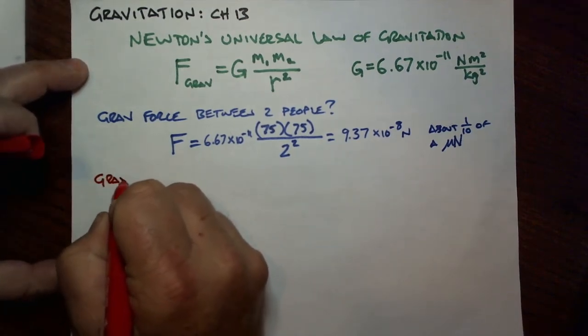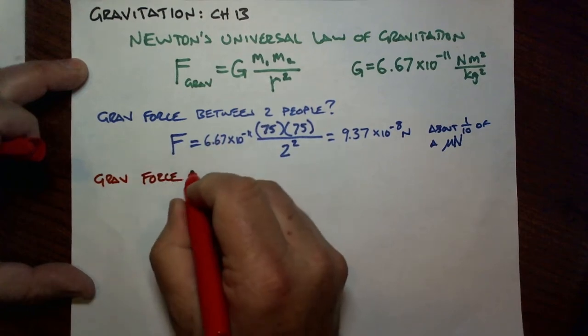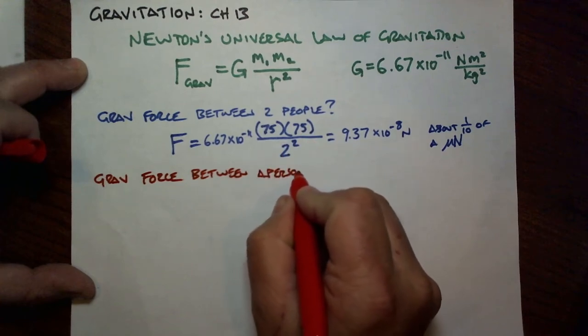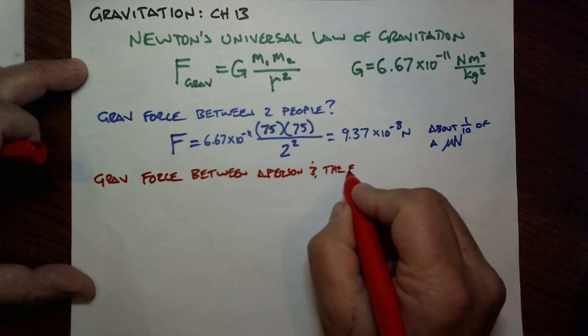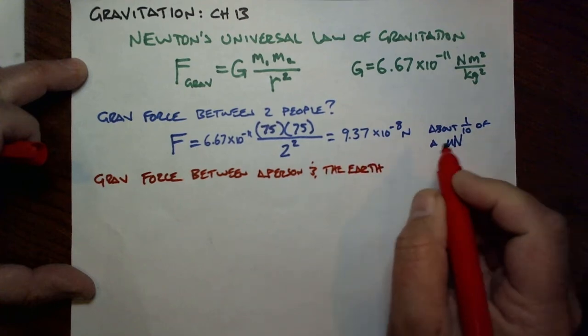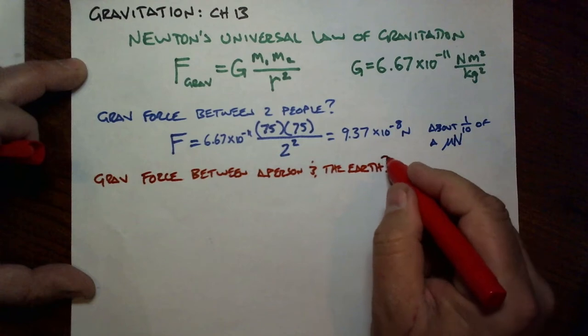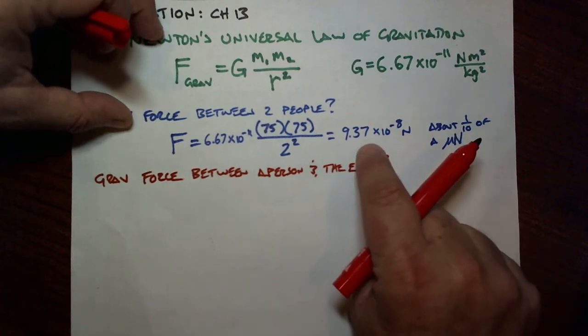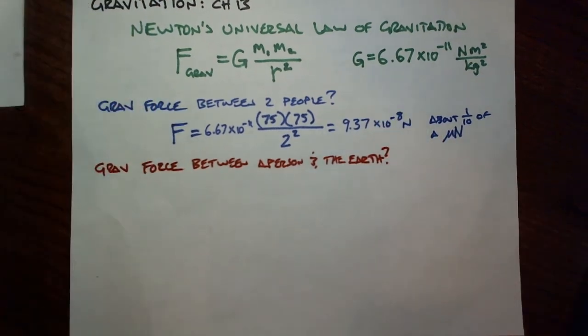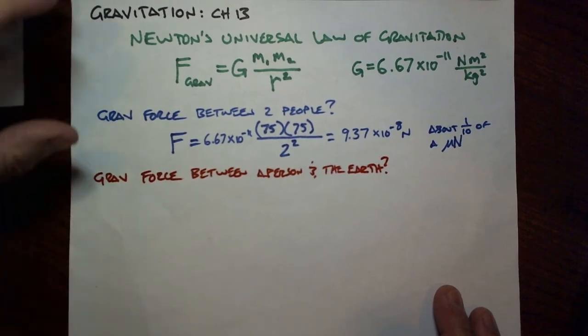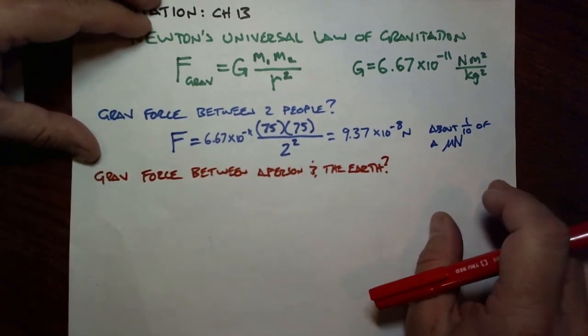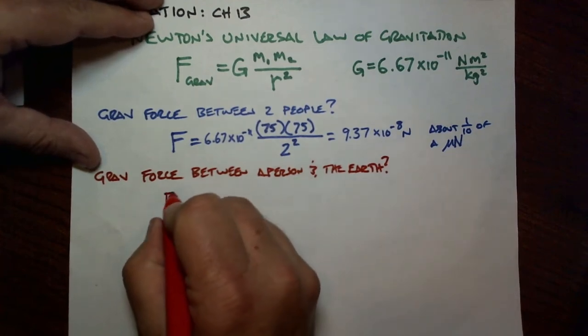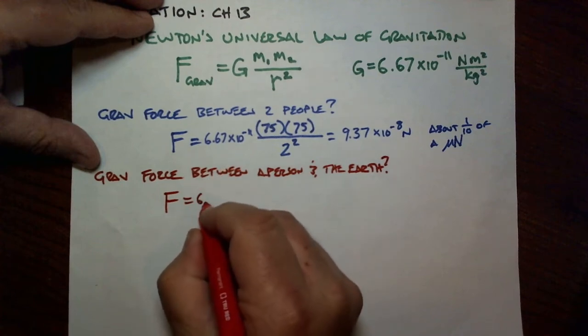Let's do something a little more reasonable. Let's find the gravitational force between a person and the Earth. This is a little more reasonable. This is a tiny, tiny, tiny number, and yet gravitation is a force that we deal with every day. So why is it that gravitation produces such large forces? Well, because one of the players in the game is the Earth, and the Earth is big.